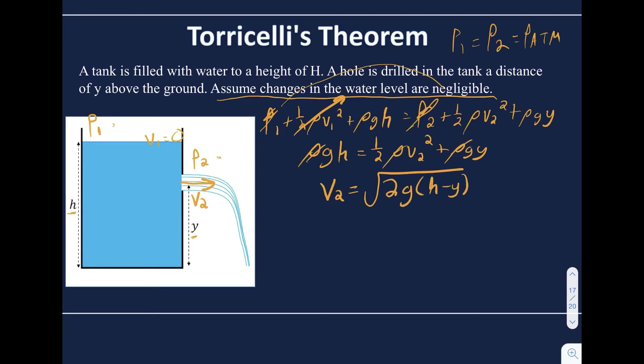In general for Torricelli's theorem, if you have a hole in the container and the water level is not changing, the speed is the square root of 2g delta h, where delta h is the change in height. This is only true if the top of the container is open to the atmosphere. The deeper the hole — the bigger the water has to fall — the faster it's going to leave the container, which is pretty obvious.